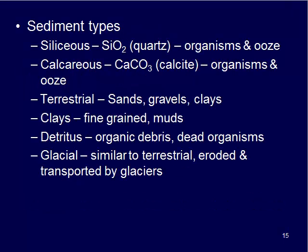The different types of sediments that we can see and collect on the ocean floor and on coastlines include ones called silicious. That term silicious means there's quartz present, which has the chemical formula SiO2, silicon dioxide. We get silicious sediments through the shells of various organisms building up after those critters die and their shells sink to the ocean floor. Also, if the water is very rich in dissolved silica, we can precipitate or form this ooze — a gooey material made of silica on the ocean floor — which eventually will solidify into a sedimentary rock if conditions are right.